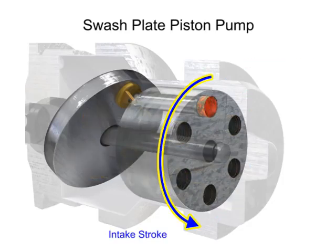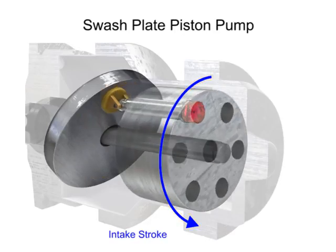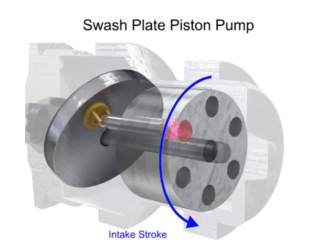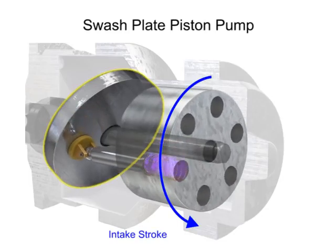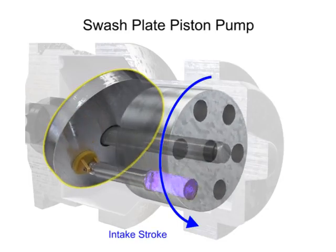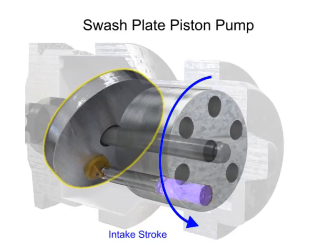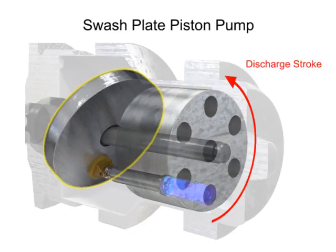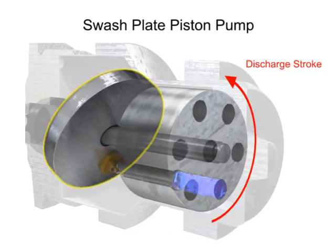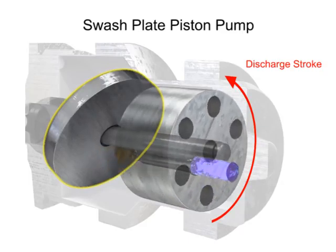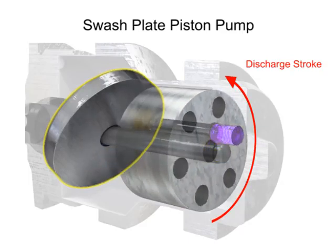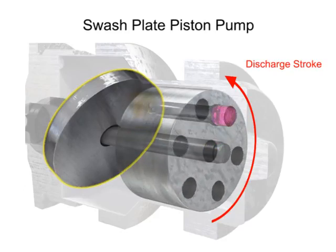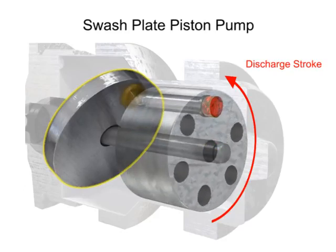On the intake stroke, a spring ensures the pistons pull back and maintain contact with the swash plate, causing fluid to fill the empty cavity left behind. On the discharge stroke, the angle of the swash plate forces the pistons back inside the piston block and discharges the fluid. The greater the slant on the swash plate, the further the pump pistons move and the more fluid they transfer.